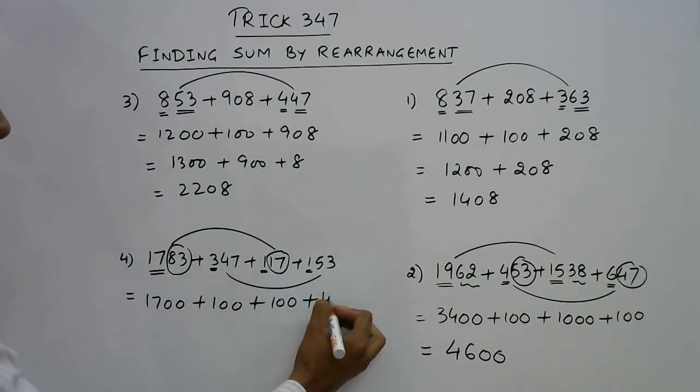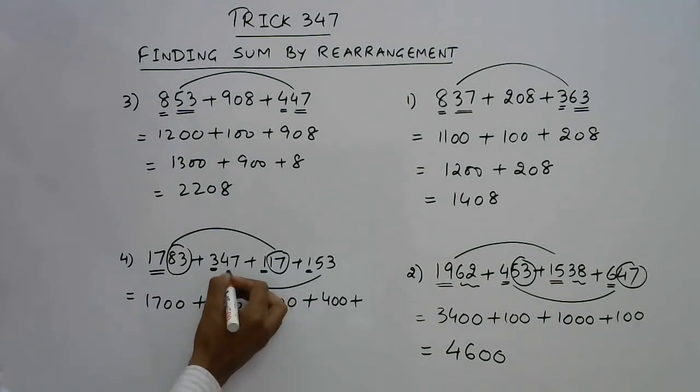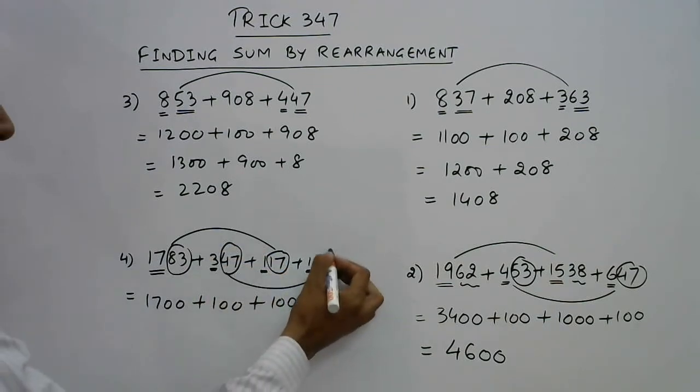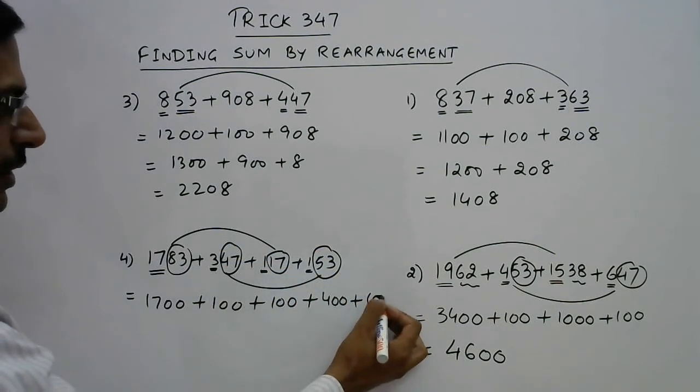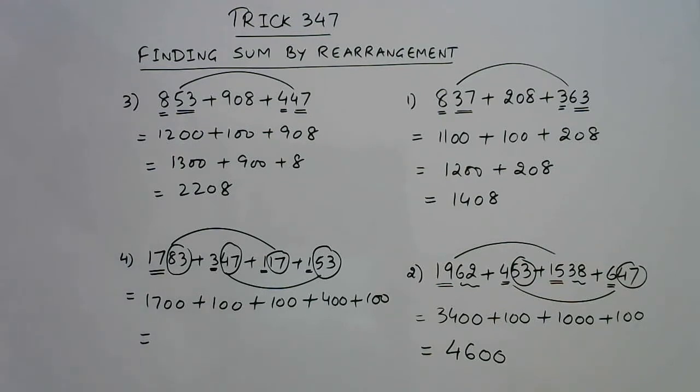Now look at the second pair: 300 plus 100 is 400, and 47 and 53 add up to 100. Now adding is very easy because they are all hundreds: 17, 18, 19, 20, 24, so 2400 is the sum of these quantities.